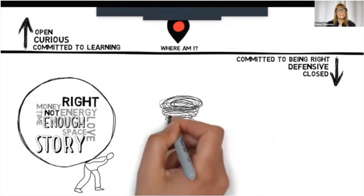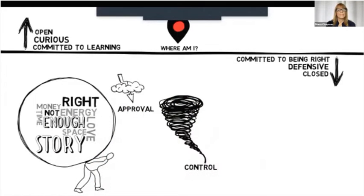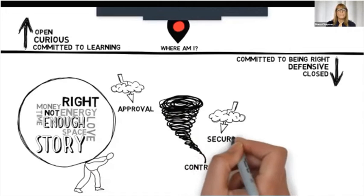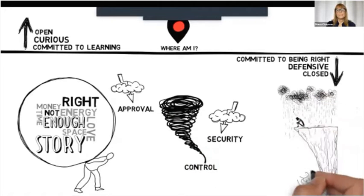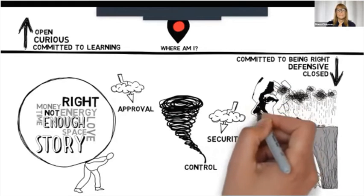People below the line also believe that there is a threat out there—something or someone is threatening their desire for approval, control, or security. And people below the line see the situation as serious. The deeper below the line they are, the more serious things look.